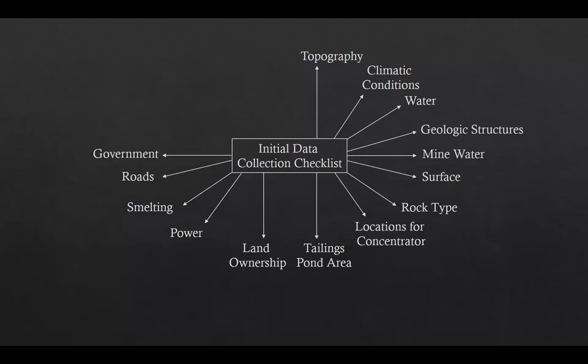The next item covers government-related considerations — for example, political climate, the climate regarding mining and whether it is favorable, and any specific mining laws or local mining restrictions. The next item is economic climate, including availability of labor, infrastructure, tax structure, goods and services availability, and materials cost and availability. The next item is waste dump location, addressing slope distance, slope profile and any opportunity to apply a leaching process in future.